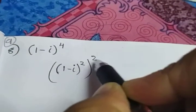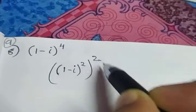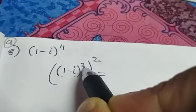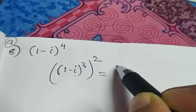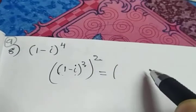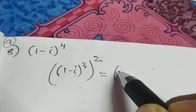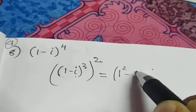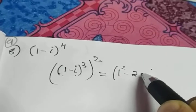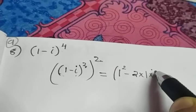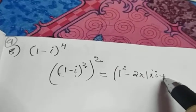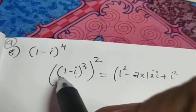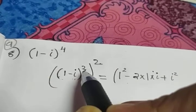Because 2 into 2 gives you 4. Now I am using 1 minus i the whole square and the form a minus b the whole square. What will be the term? a squared, which is 1 squared, minus 2ab — that is 2 into 1 into i — plus b squared, which is i squared. That is the expansion of 1 minus i the whole square.